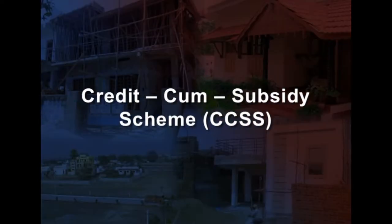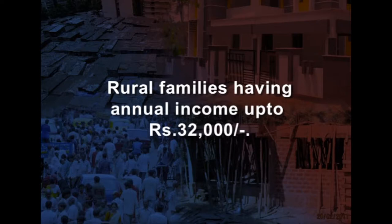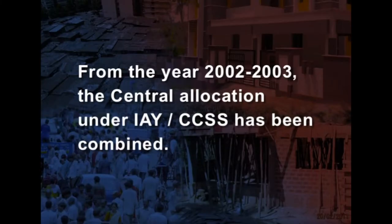The Credit cum Subsidy Scheme (CCSS) for rural housing was launched with effect from 1999, targeting rural families having annual income up to Rs. 32,000. While subsidy is restricted to Rs. 10,000, the maximum loan amount that can be availed is Rs. 40,000. The subsidy portion is shared by the centre and the state in a 75:25 ratio. The loan portion is to be dispersed by commercial banks, housing finance institutions, etc. From the year 2002-03, the central allocation under IAY and CCSS has been combined, with 20% of IAY funds earmarked for upgradation also available for implementation of the scheme.